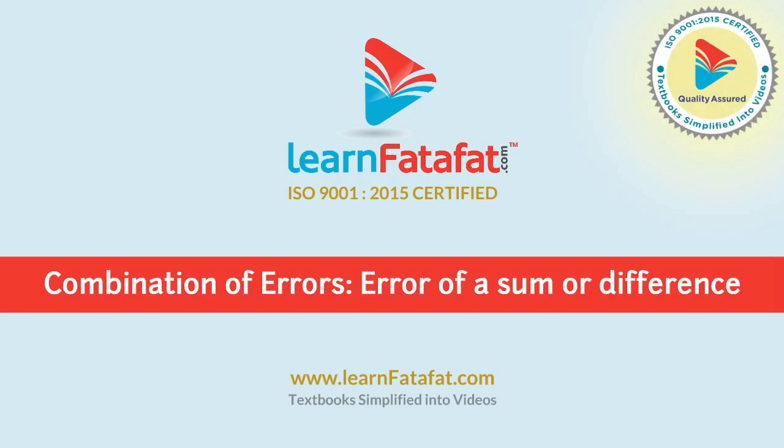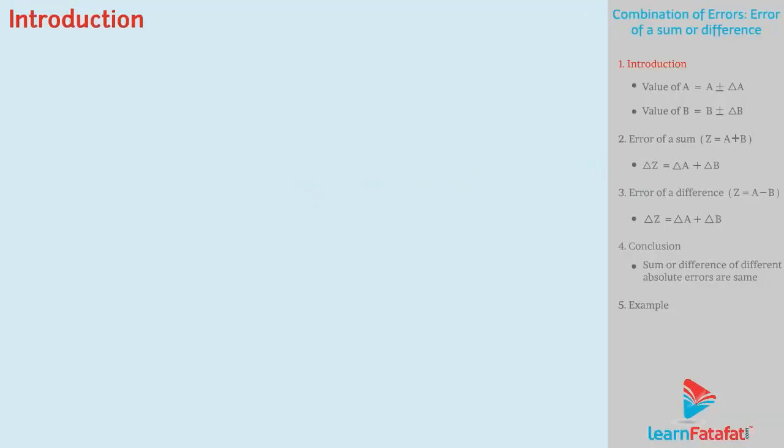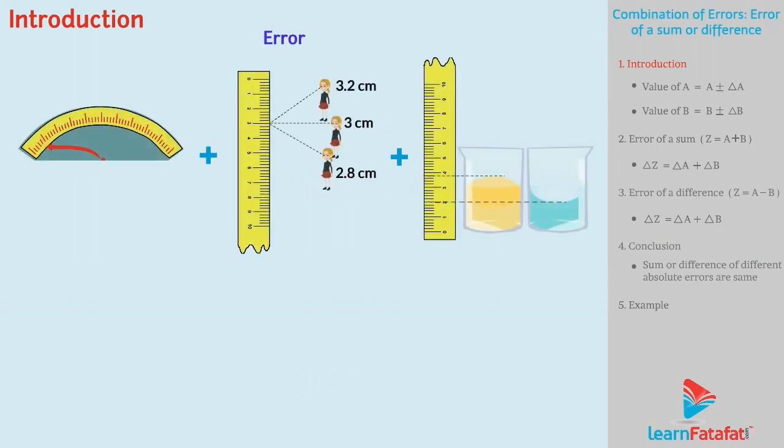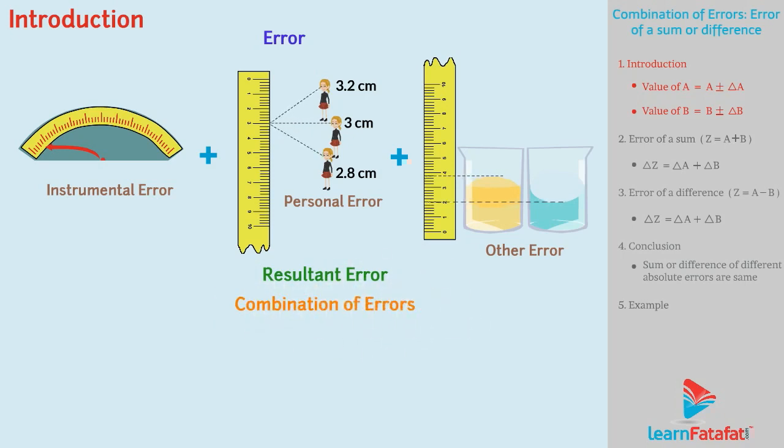Combination of errors: Error of a sum or difference. Dear students, in practical sense, errors are combination of many sources such as instrumental error, personal error, or any other. In such conditions, we have to find the resultant error. For that, we have to learn the combination of errors. Let's start.